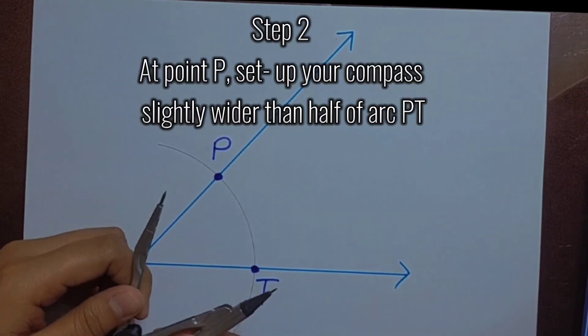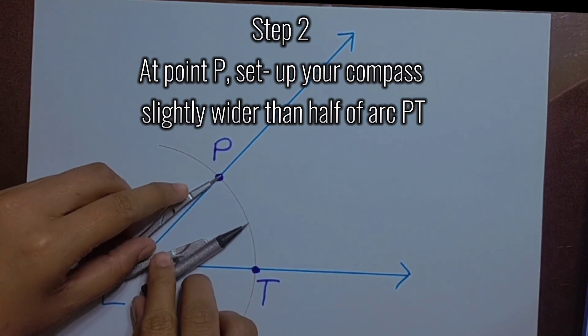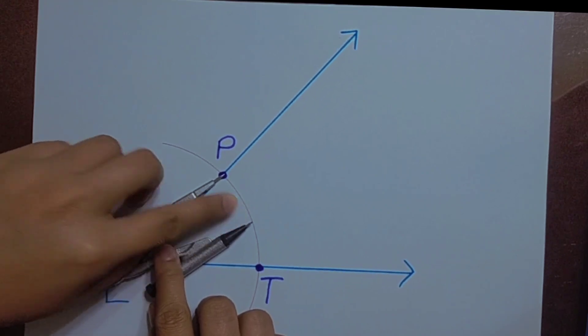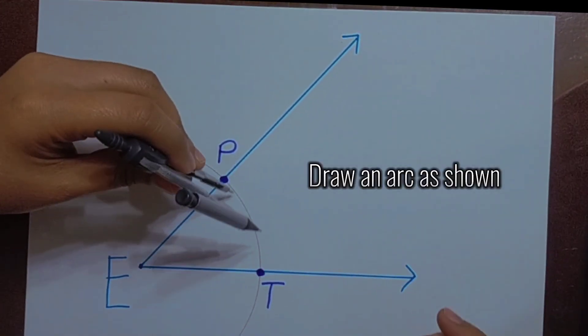Step 2. At point P, set up your compass slightly wider than half of arc PT. Draw an arc as shown.